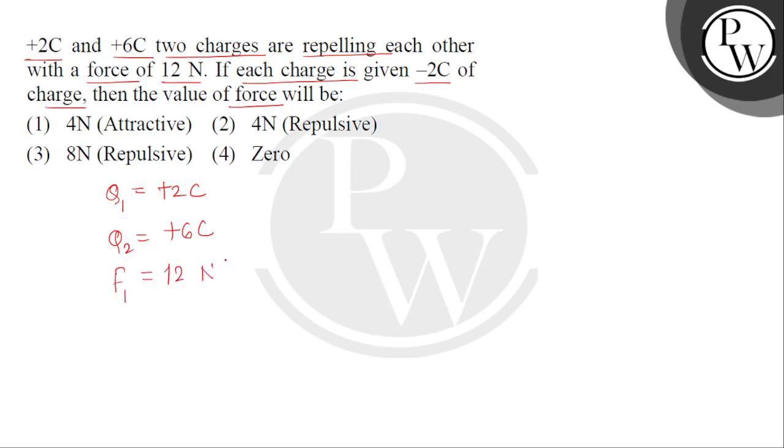Now bachyo, in the next case, we give both first and second charges -2 coulomb. So q1 dash becomes +2 coulomb - 2 coulomb, which means 0. And q2 dash becomes +6 - 2, which means +4. And we need to find what the new force F1 dash value will be.